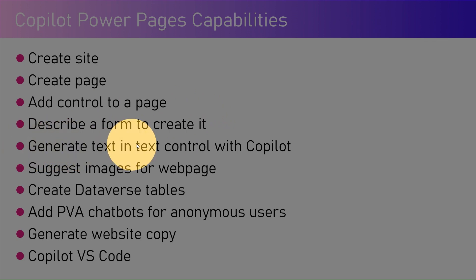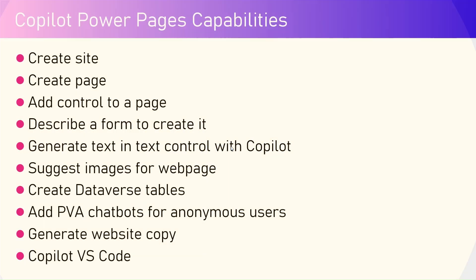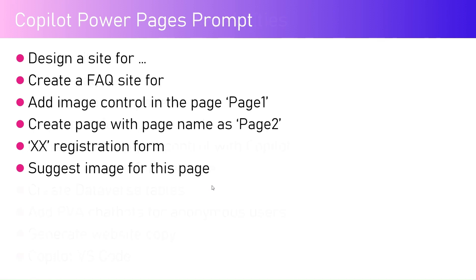You can generate text in the text control with Copilot — if you're drafting any content for your Power Pages page, you can ask Copilot to suggest content. You can also suggest images for the web page, create database tables, add Power Virtual Agents chatbots, generate website copy, and do more with Copilot within VS Code as well.